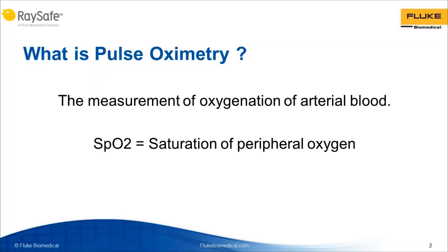So, what is pulse oximetry? It's the measurement of the oxygenation of the arterial blood. There's an acronym, SPO2. Pulse oximetry monitors SPO2, and the acronym stands for the saturation of peripheral oxygen. The amount of saturation means how much of the arterial blood is carrying oxygen, so 100% saturation would mean all of it is oxygenated. The pulse oximetry reads out in percentage of the arterial blood that is oxygenated. Biomedical equipment professionals should be well grounded in the fundamentals of this very valuable technology in order to understand it adequately.